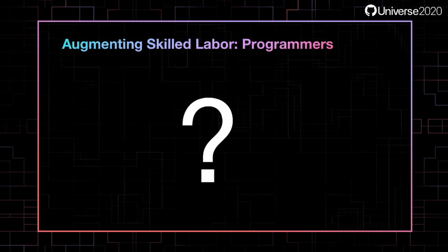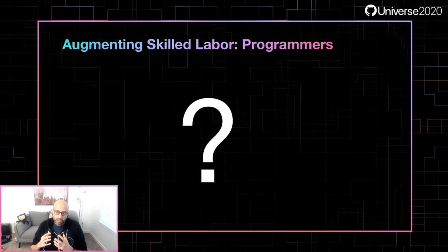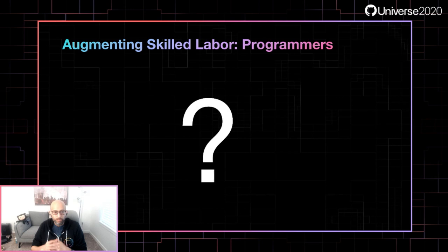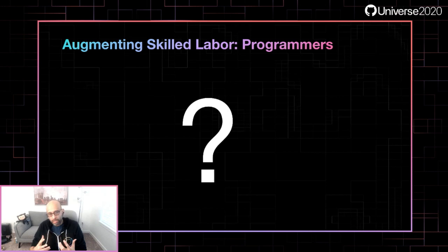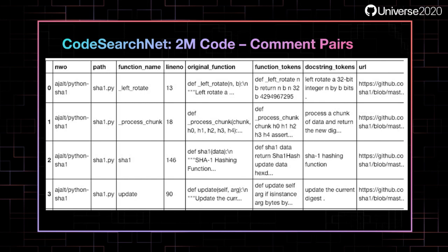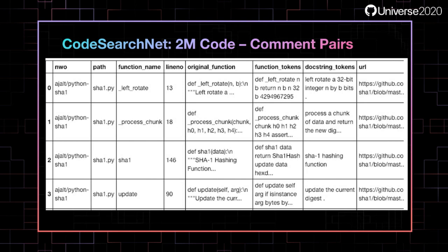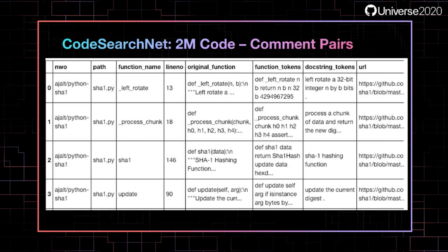This begs the question: what about programmers, and can artificial intelligence aid programmers and how? That's a question we have been interested in at GitHub as researchers. One key facet of AI in machine learning is it's very data hungry — you need lots of data and examples to train an algorithm to understand a domain like programming. This is why GitHub released CodeSearchNet.